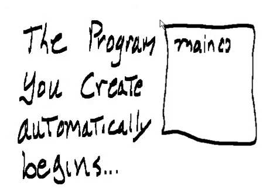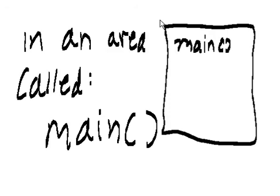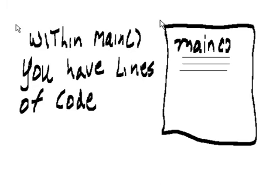The program you create automatically begins in an area called Main. Within Main, you have lines of code.